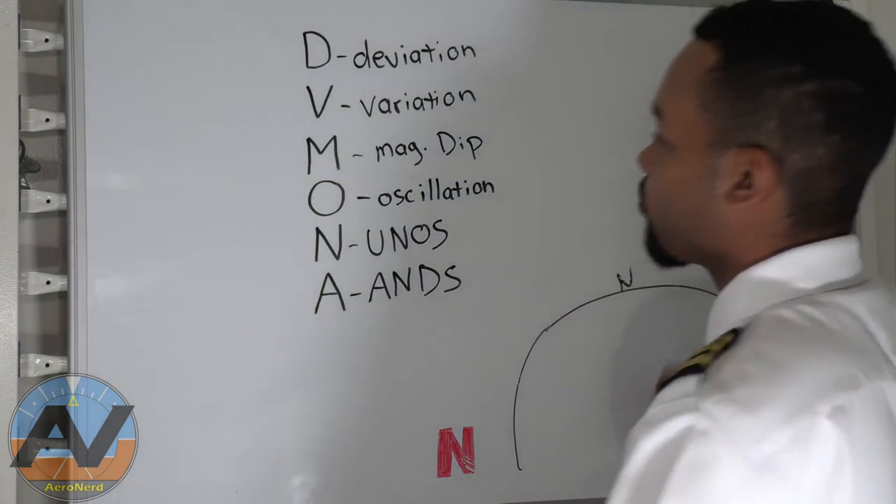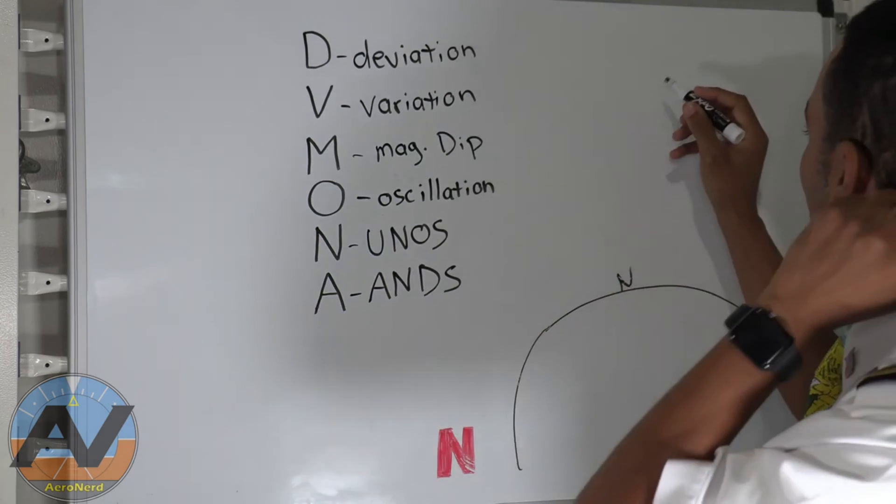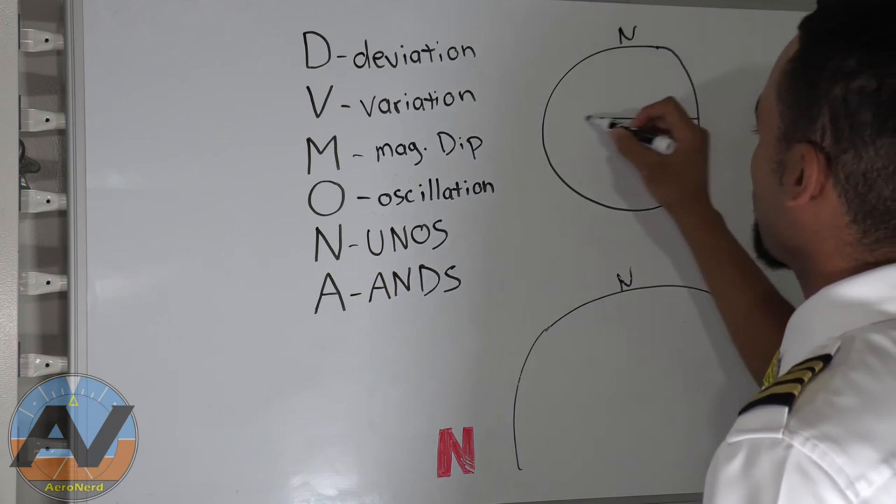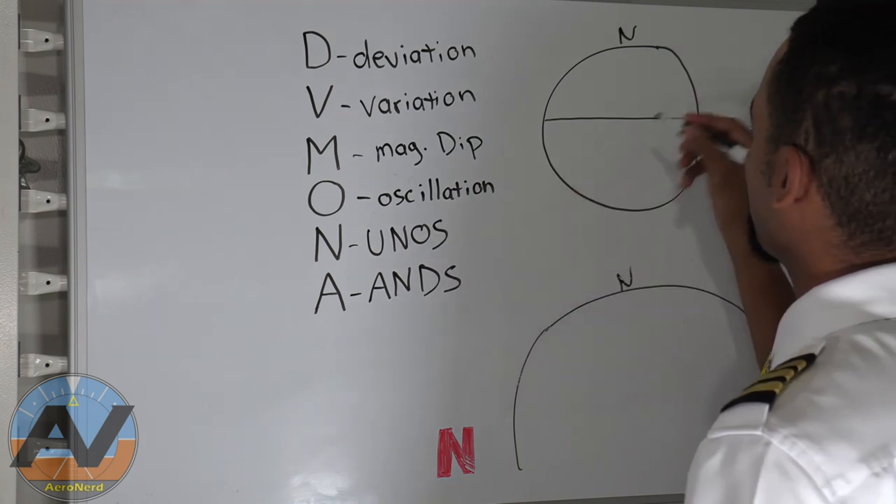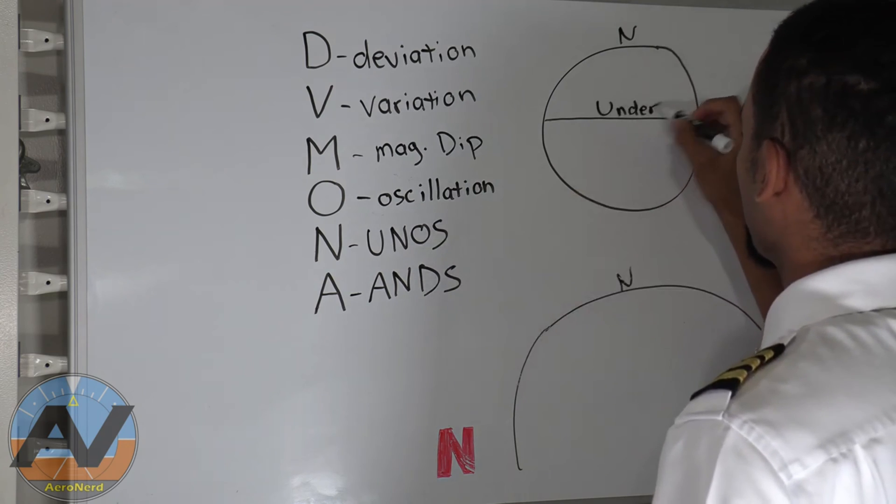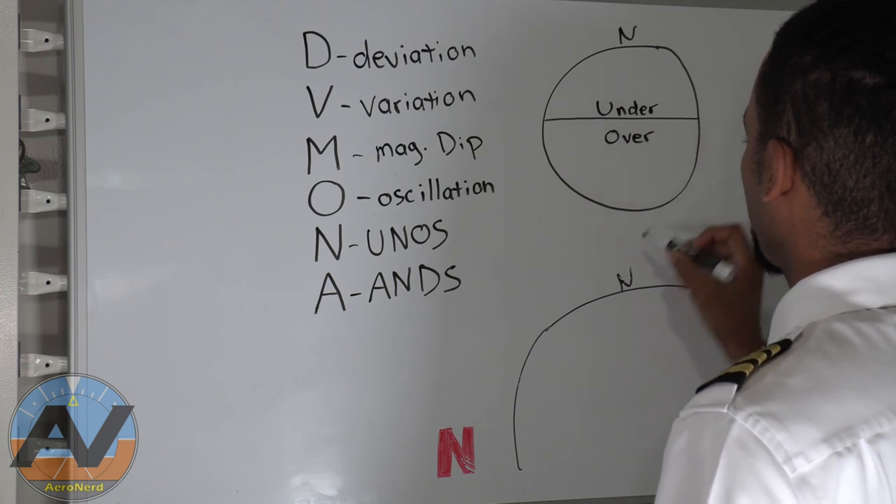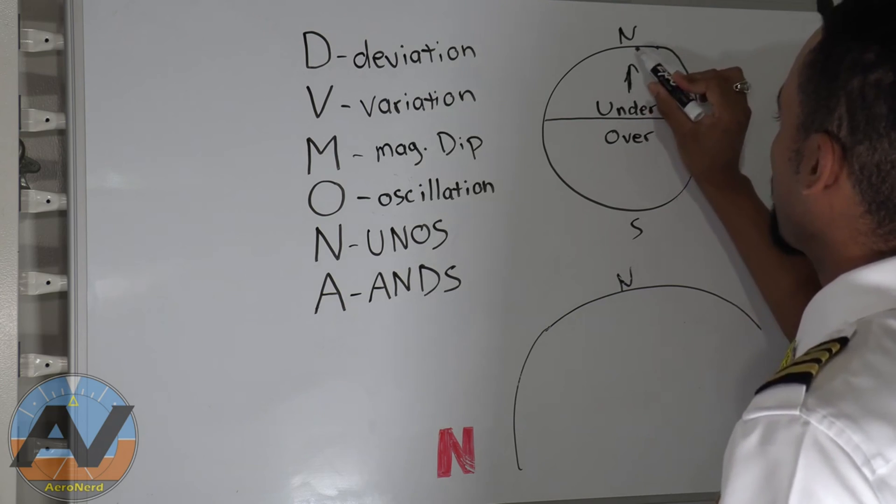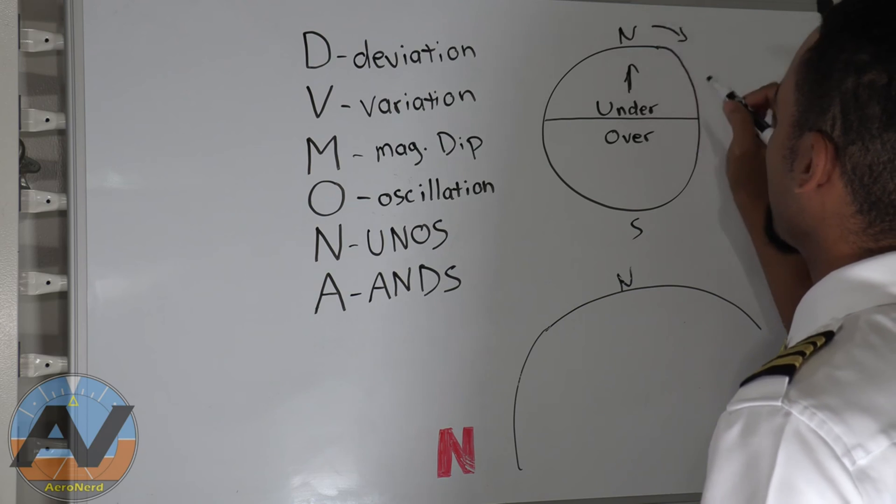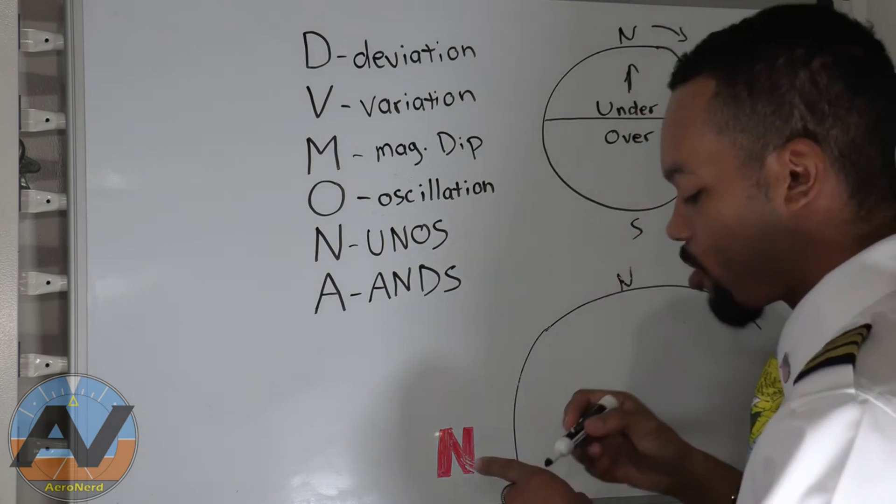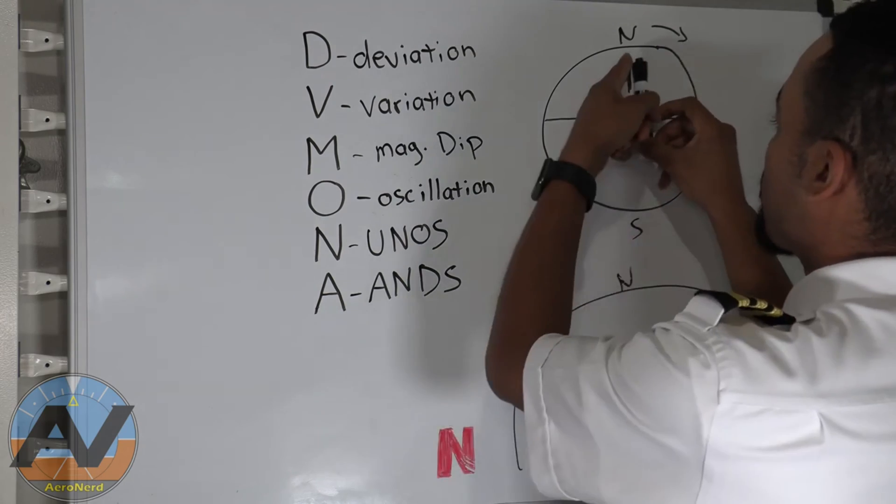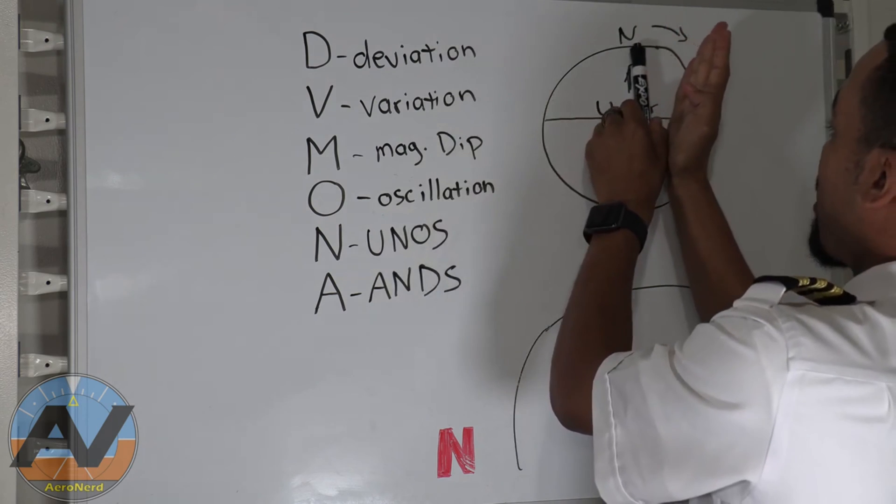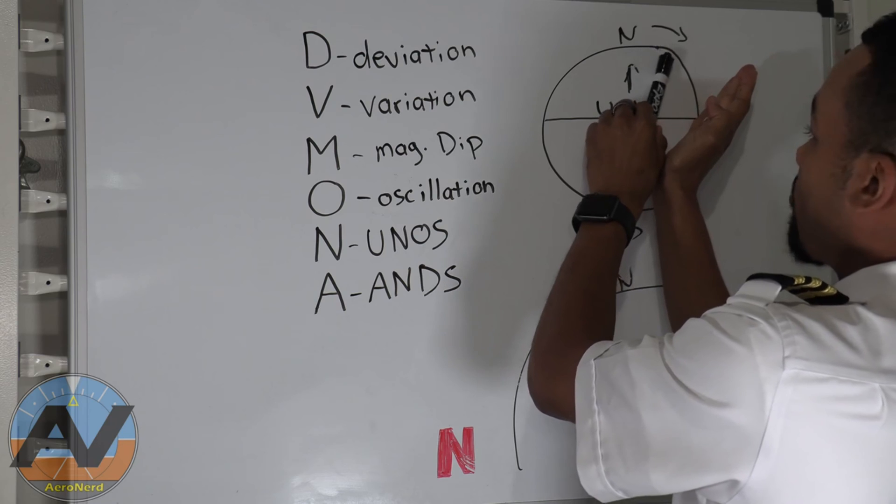And the next one is going to be UNOS. Now this is the one that I had a little bit trouble to understand. So I'm going to try to explain this the best I can. So here is north. And so this is going to stand for undershoot north, overshoot south. So undershoot north. So this is undershoot, and this is going to be overshoot. This is south.